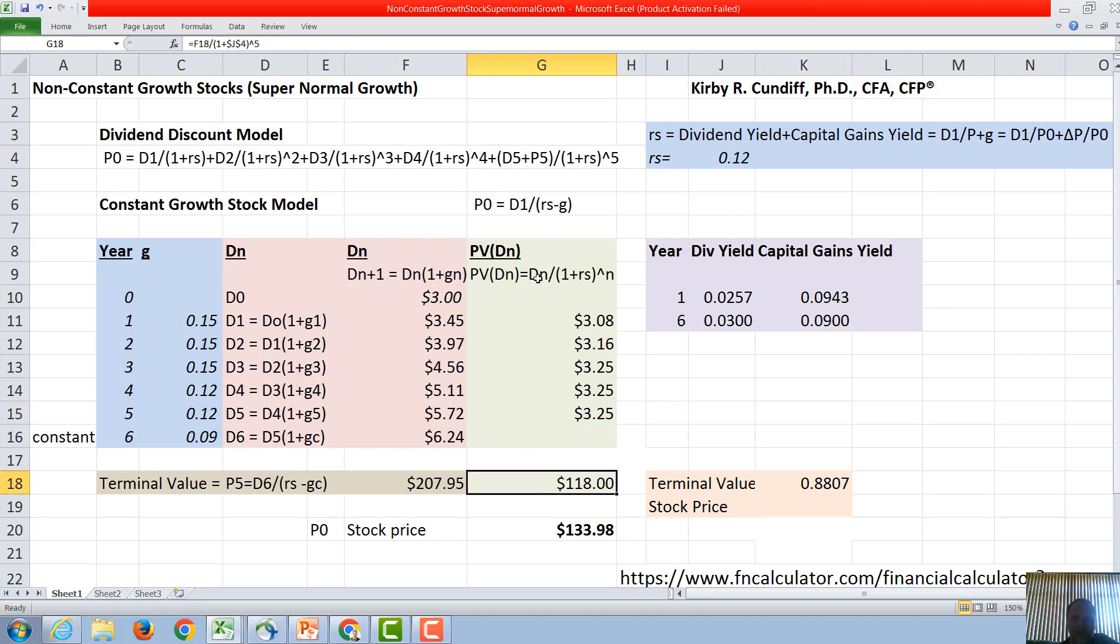We then need the present value of the terminal value, our P5 over (1 + rs) to the fifth, which is going to be 207.95 divided by 1.12 to the fifth, which gives us $118.